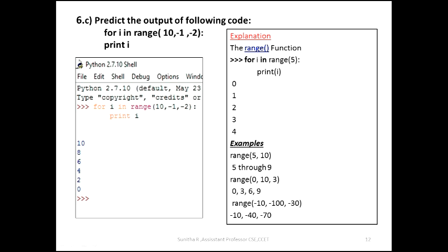The range function can take a maximum of three values. For example, range 5 comma 10 gives 5, 6, 7, 8, 9 - the highest value minus 1. Range 0 comma 10 comma 3 gives values with a step of 3.